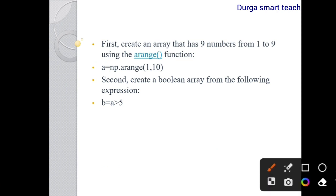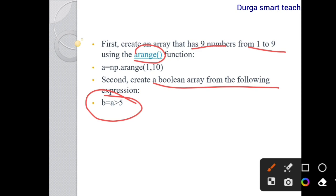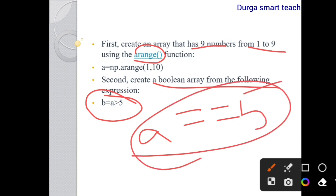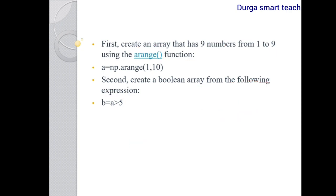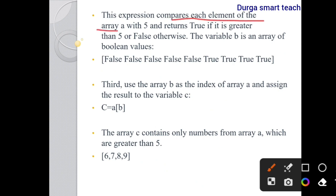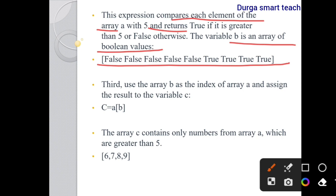To summarize: first, take numbers from 1 to 9 using np.arange. Second, create a boolean array using the expression b = a > 5 — conditions only contain boolean values, either True or False. This expression compares each element of array a with 5 and returns True if greater than 5, or False otherwise. The variable b is an array of boolean values.